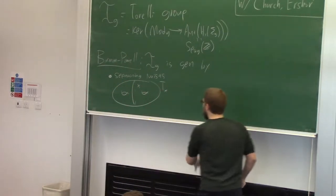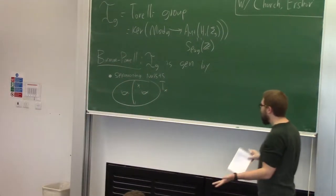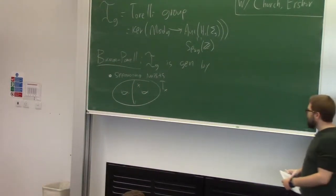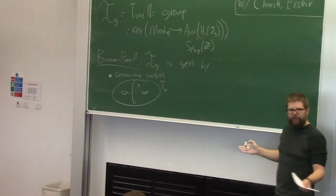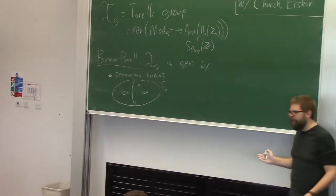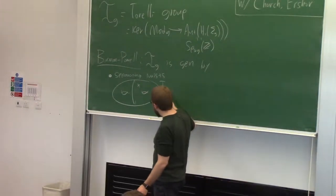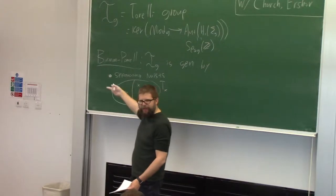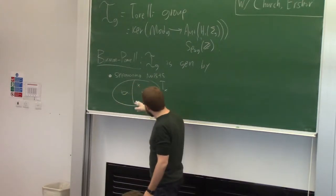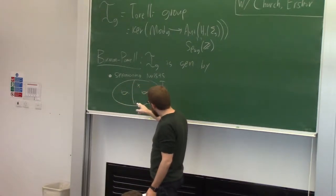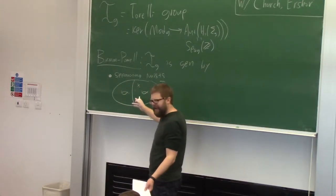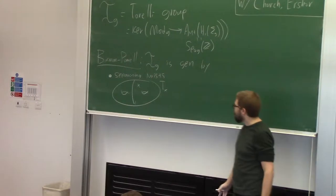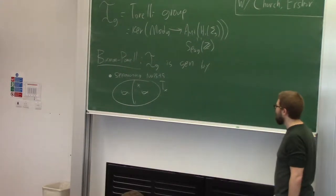Those are inside Torelli. Why are those inside Torelli? Well, if you think about what Dehn twists do to homology — you have a cycle wandering around your surface, every time you hit the curve you go around it and keep going, so you're picking up copies of x. But x is trivial in homology, so this is inside Torelli.